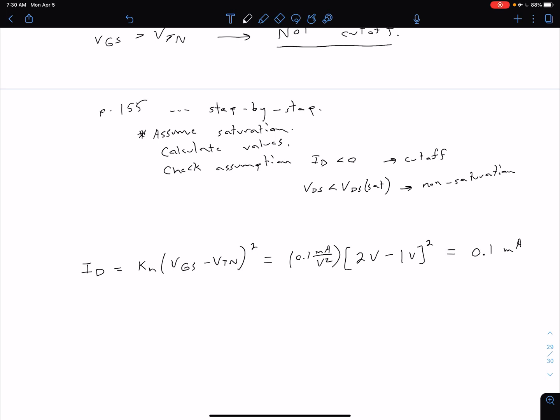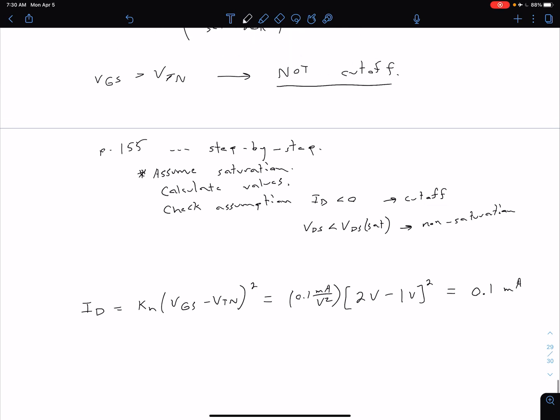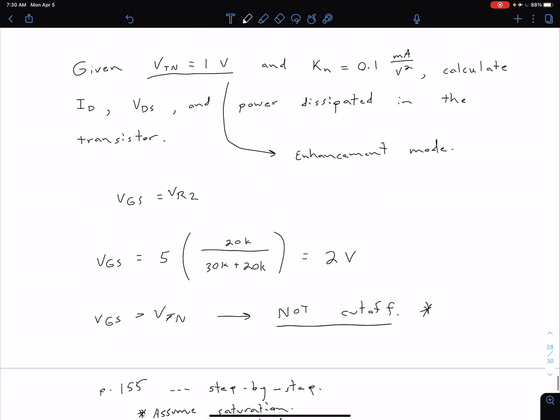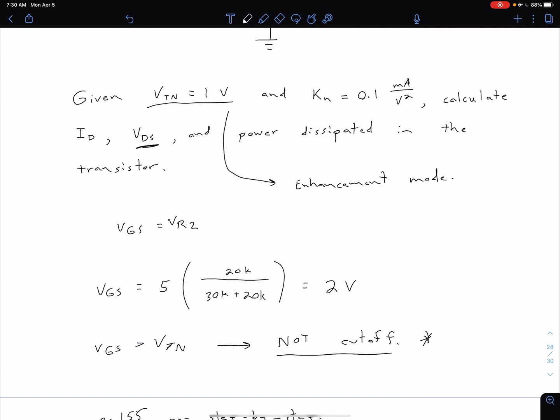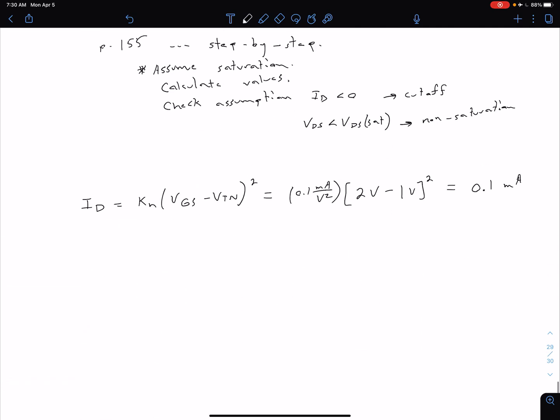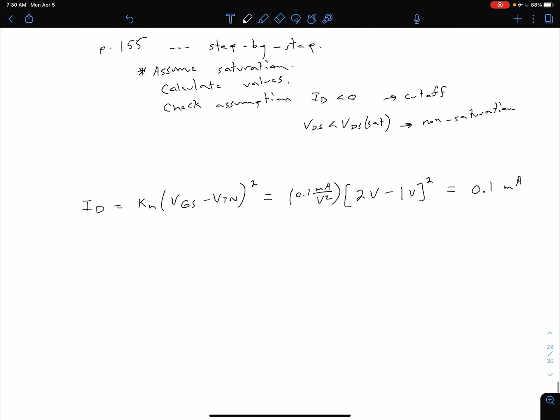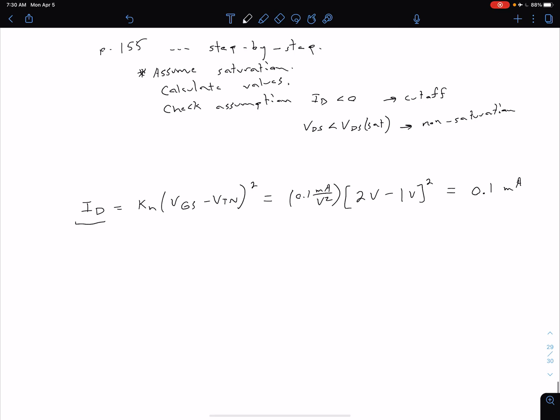So as we expect, our ID is not less than zero, so we're not in cutoff. But again, we sort of already determined that up here. So the next thing we want to do is check to see if our VDS is less than VDS sat. And so conveniently, we were also asked to find our VDS in this problem. So how do we find our VDS now that we know ID, or at least we think we know ID, we still need to verify our operation mode.